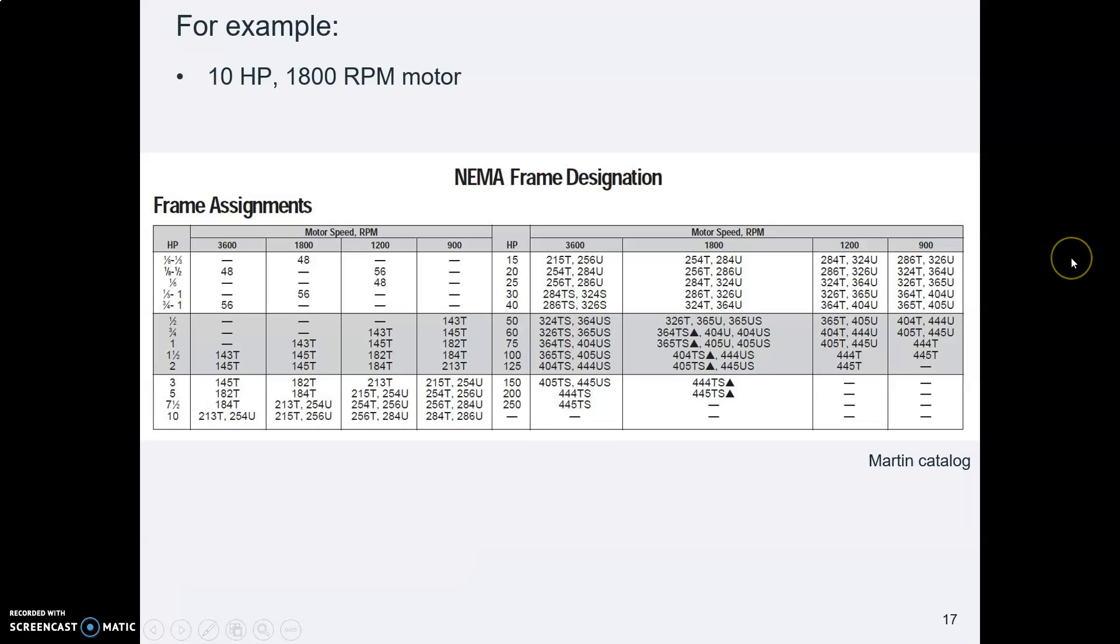So let's say you have a 10 horsepower, 1800 RPM motor. What size is it? The frame size, the NEMA frame size, for a 10 horsepower, 1800 RPM, following across and down, we find out that it has a 215T frame. Let me just say that U frames are old.